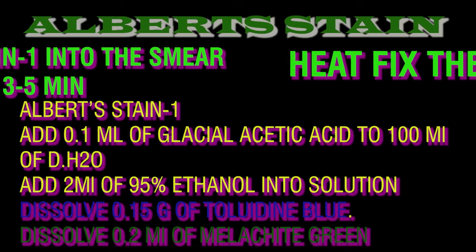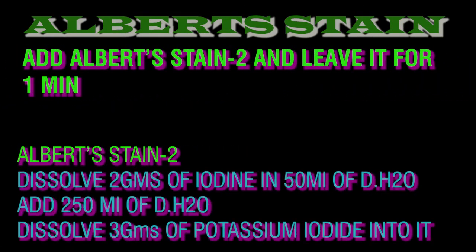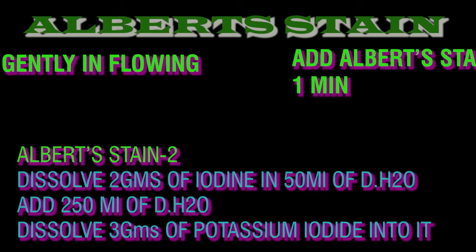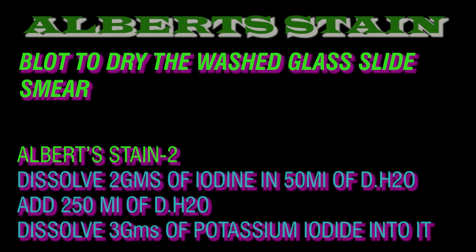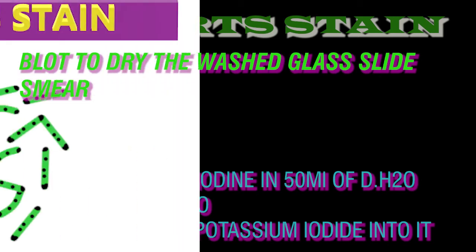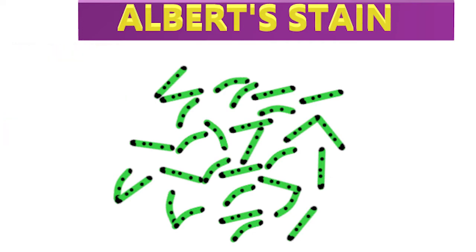Special stains are used for identification of a particular bacteria present in the sample when expected. Albert's stain is used when Corynebacterium diphtheriae is suspected from a throat swab. Identification of metachromatic granules in Corynebacterium diphtheriae suggests its presence in stat samples.